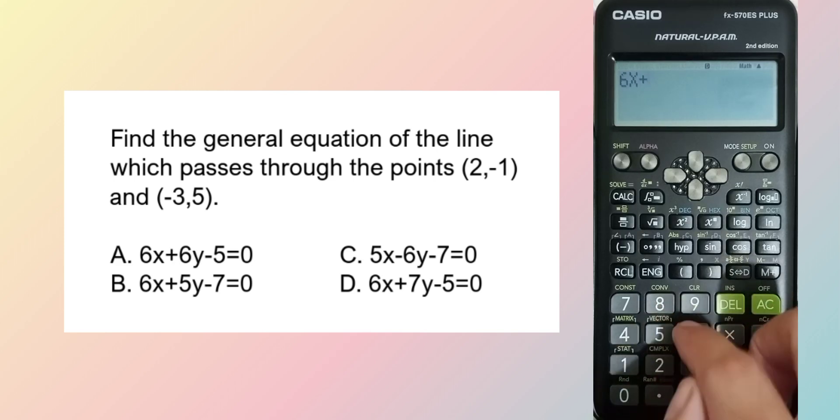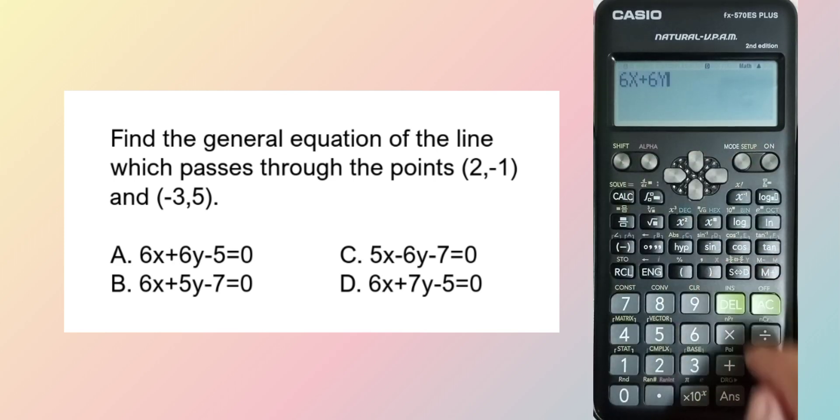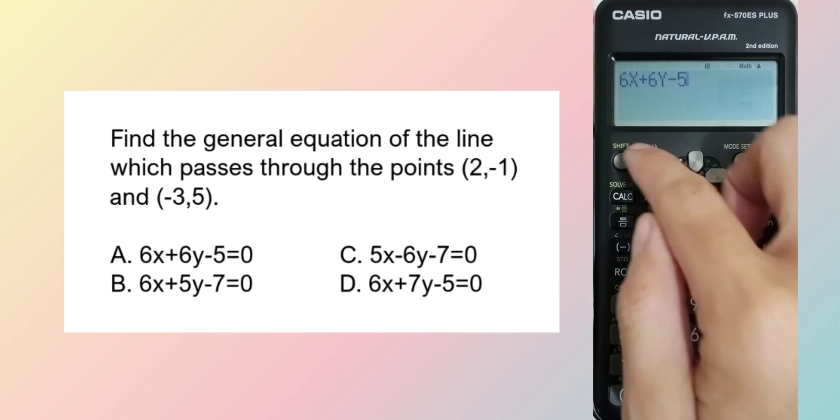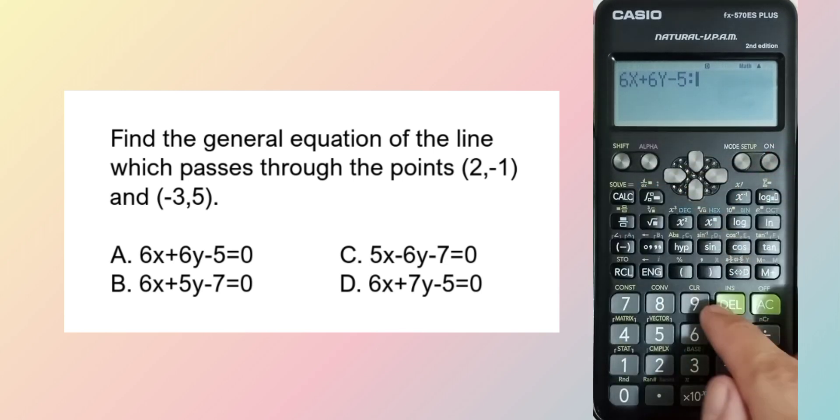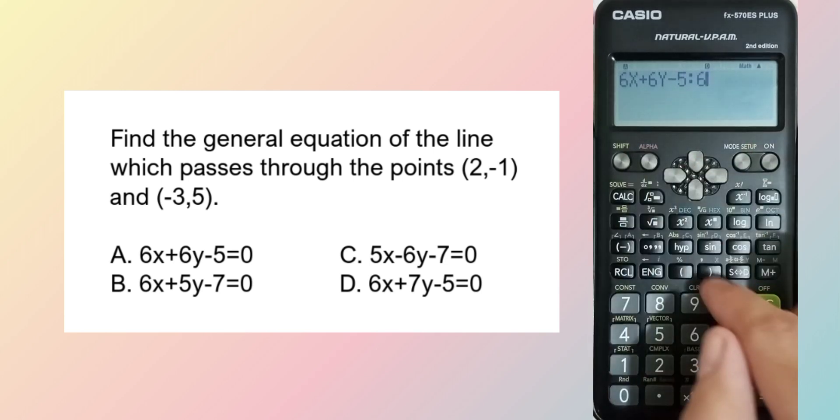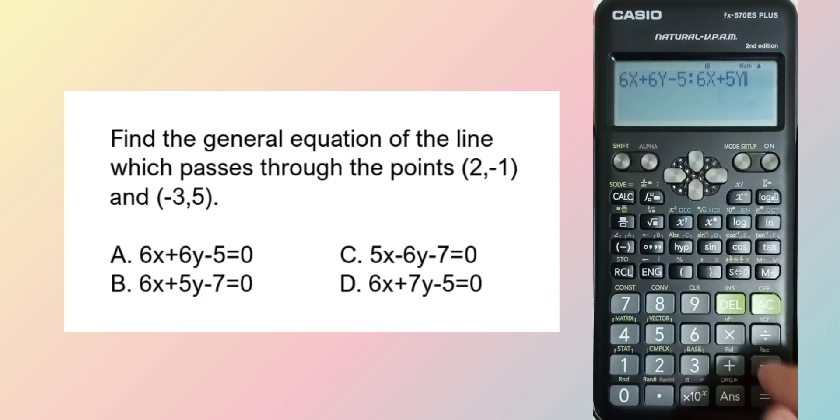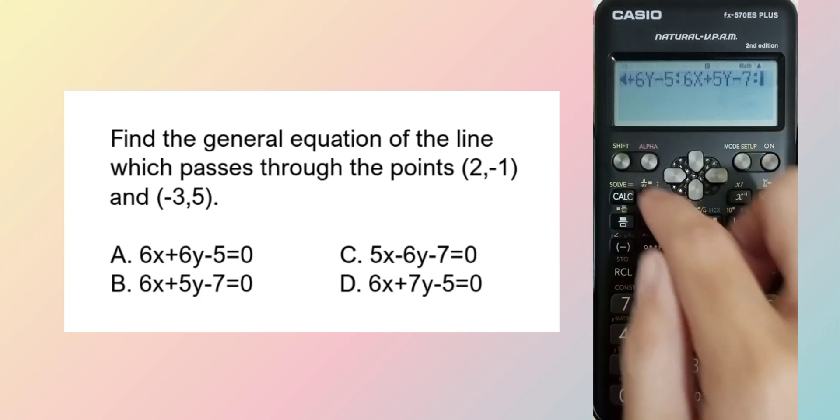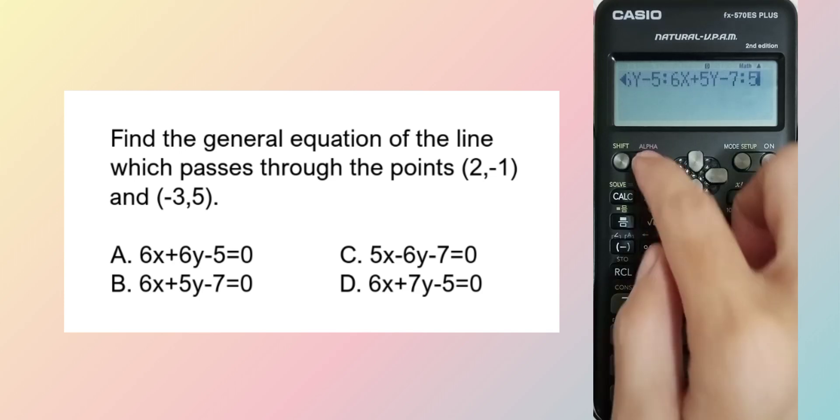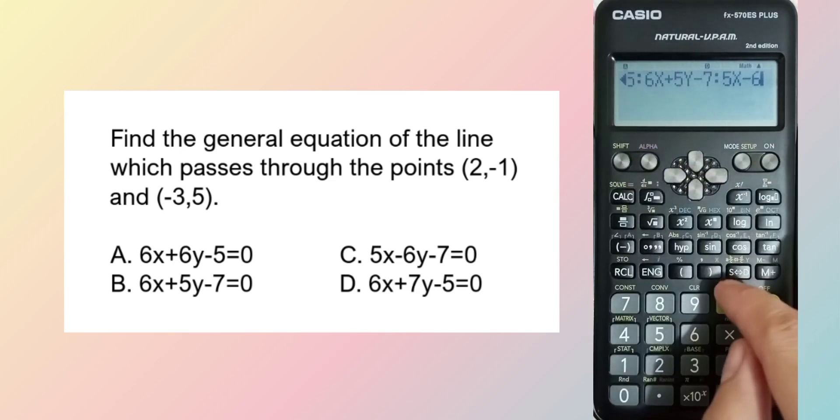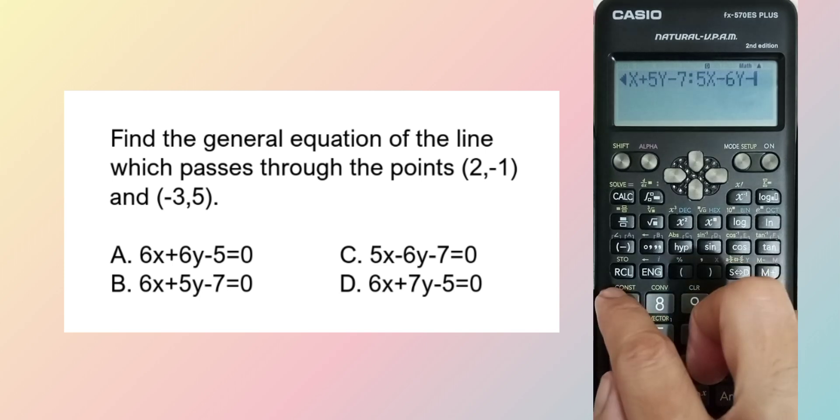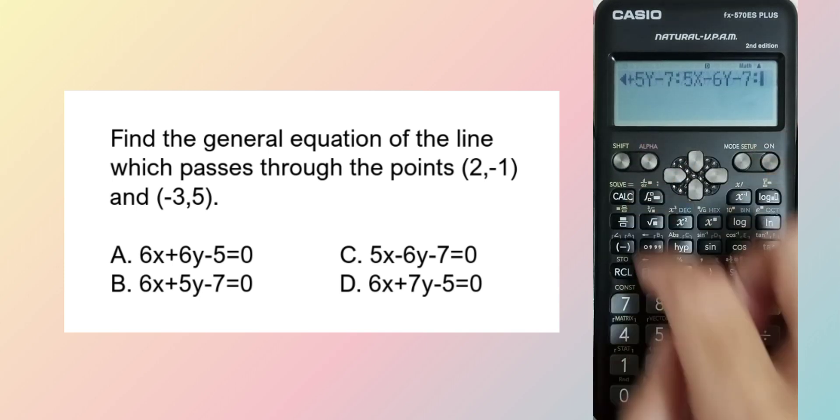6x plus 6y minus 5. Then 6x plus 5y minus 7. 5x minus 6y minus 7. Then the last,